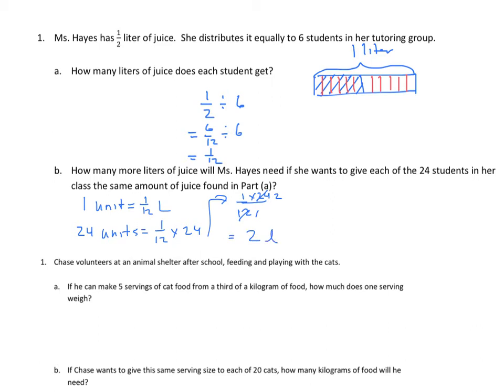I'm going to go up here. So one twelfth times 24 is one times 24 divided by 12. We can make this a two and this a one. We get two liters. That's two liters, but how much more? So I have two liters minus one half, and that equals one and a half. So the answer is one and a half liters.